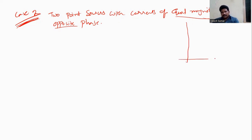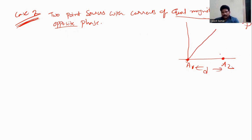Let us consider this is the origin. We have point source A1 and point source A2, both separated by a distance d. Let us consider point B. A2 will reach point B earlier compared to A1. The path difference is d·cosθ.